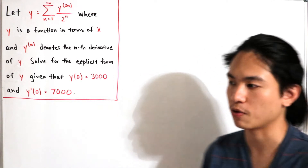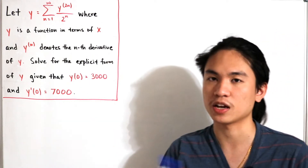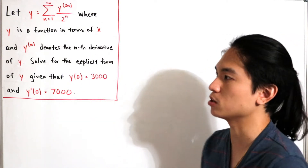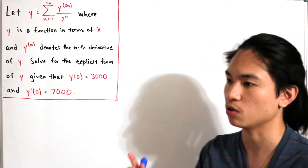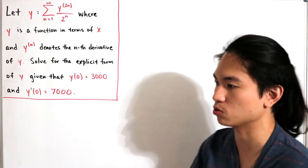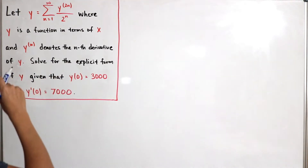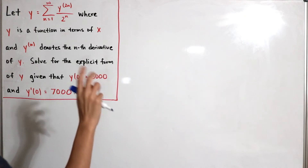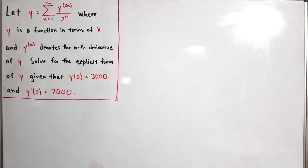There are actually two ways to solve this, and I'm going to show both. The key idea is: we take our given function, re-index the sum, and form a differential equation. Once we have a general solution, we use the initial conditions to solve for the unknown constants.